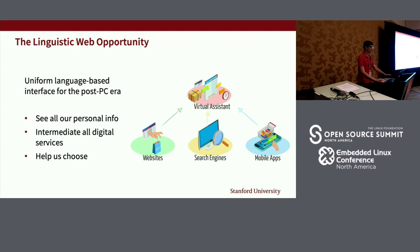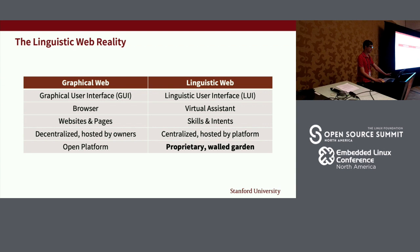When we look at the reality, it's interesting to compare the linguistic web against the graphical web. While in the graphical world we have a GUI, in the linguistic world we have a natural language interface, or LUI. Browsers are replaced by virtual assistants, and websites and pages are mapped to skills and intents. But while the graphical web is decentralized and hosted by the owners of the content, the linguistic web is centralized, hosted by the platform like Alexa or Google, and is proprietary — a walled garden.